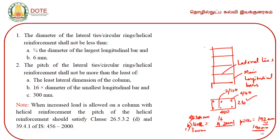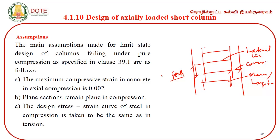That is how the pitch of lateral ties is found for axially loaded RCC columns. When increased load is allowed on a column, helical ties are provided. A helical tie is a three-dimensional tie that confines the concrete and provides 5 percent extra strength due to confinement. Helical ties are used only for heavily loaded columns.